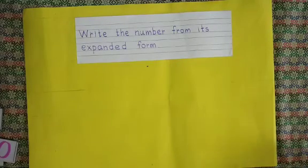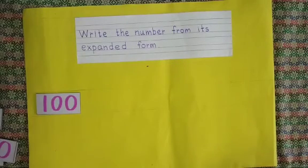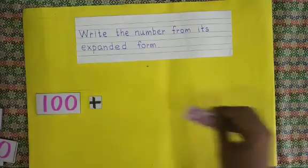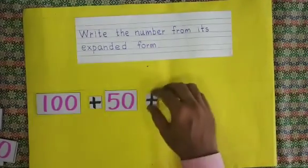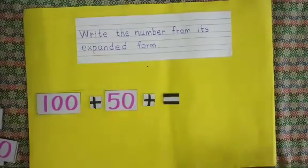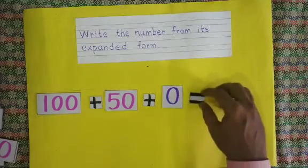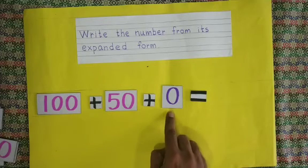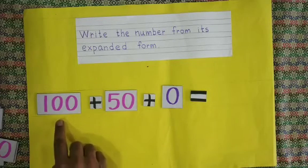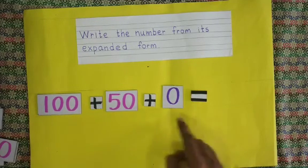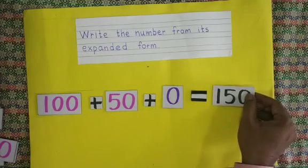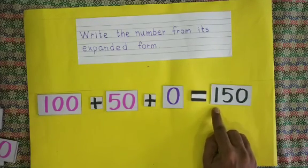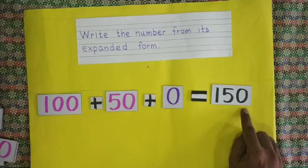Our next number: 1 hundred, then 50 is given, then zero units is given. Read: one hundred and fifty, zero units. One hundred and fifty — 1 hundred, 5 tens, 0 units = 150.